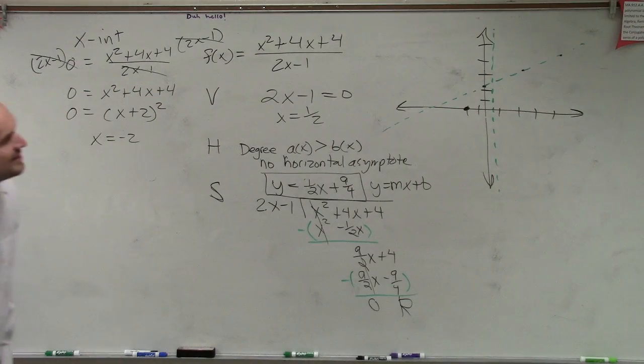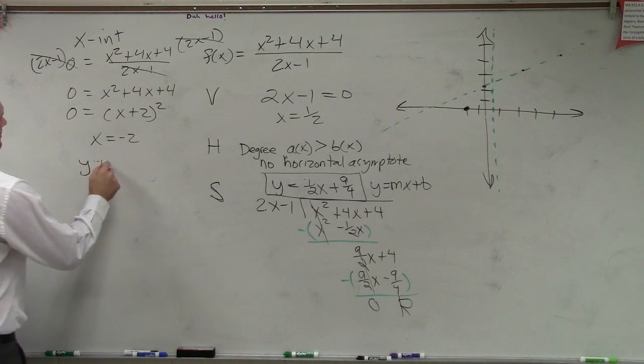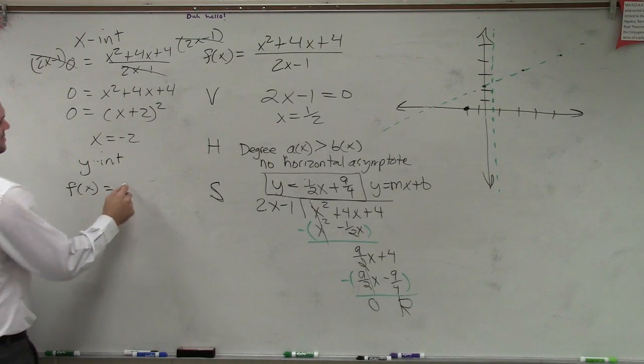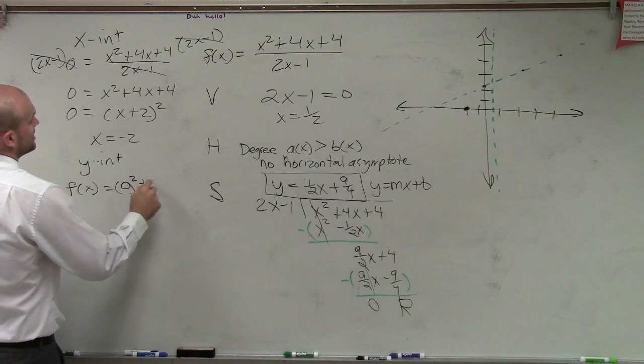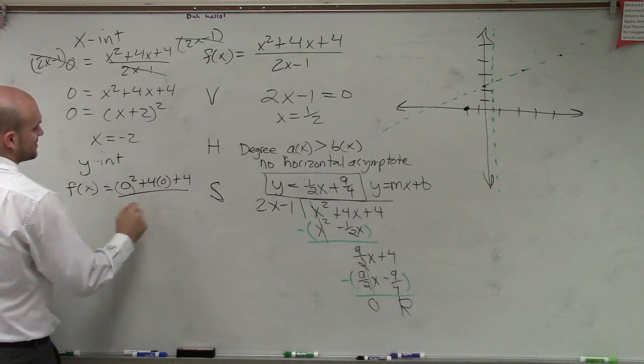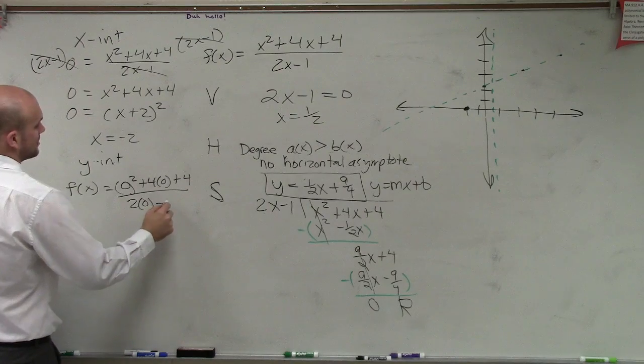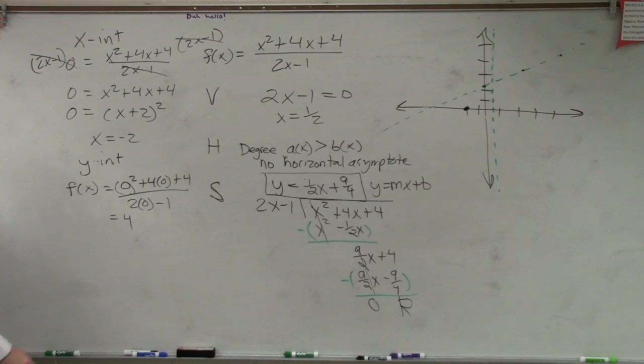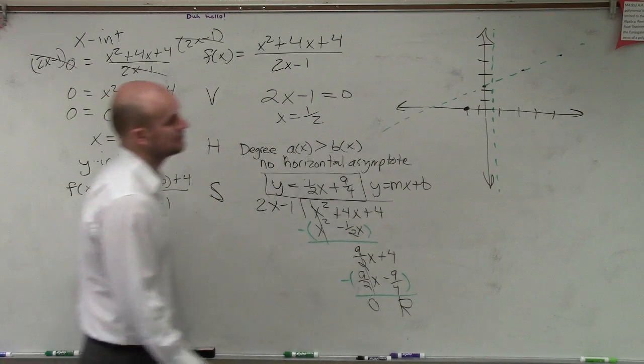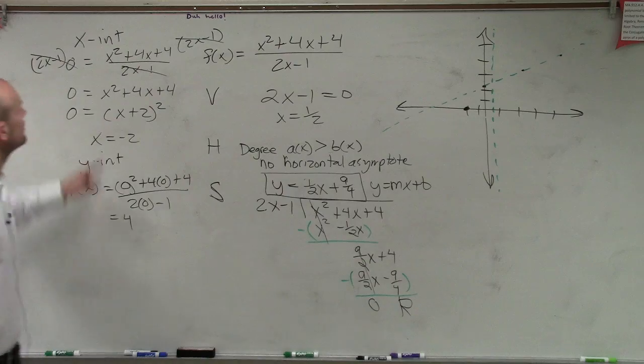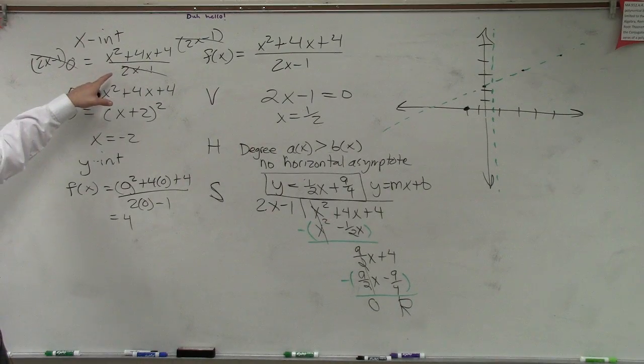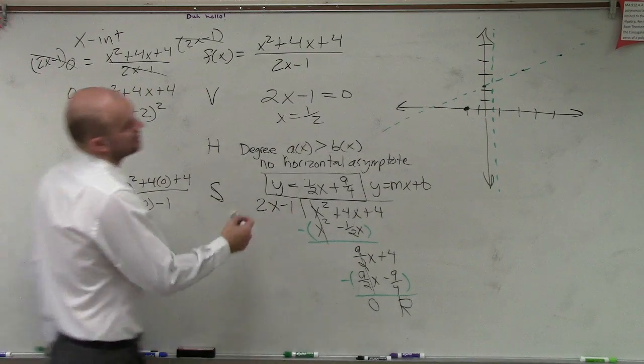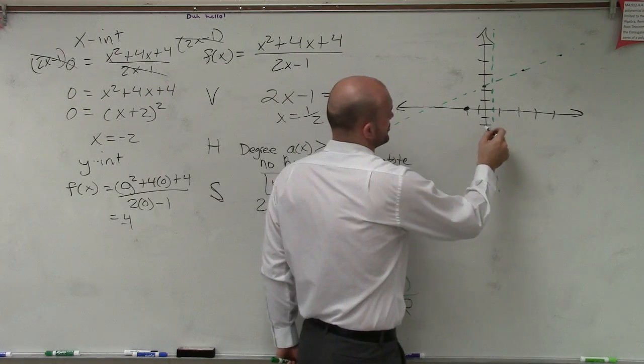And then we need to find our y-intercept. So y-intercept is going to be f of 0 equals 0 squared plus 4 times 0 plus 4 divided by 2 times 0 minus 1. So then we end up getting 4 over negative 1. 4 over negative 1. So it's negative 4. So now we go 1, 2, 3, 4.